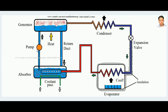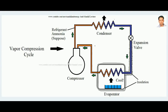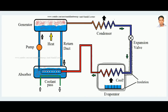You might be thinking that although the compressor is removed, a pump is still required and pumps need electrical energy too. However, the amount of electrical energy required by the pump is very much less compared to that of a compressor. So with a very small electrical power input we can develop a higher refrigeration effect. This concludes the working of the aqua ammonia based vapor absorption cycle. Thank you.